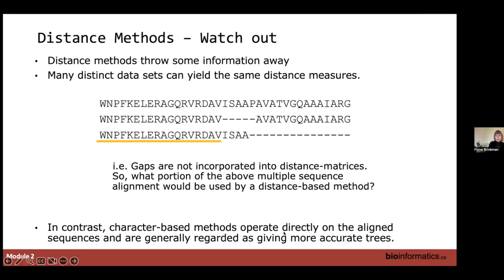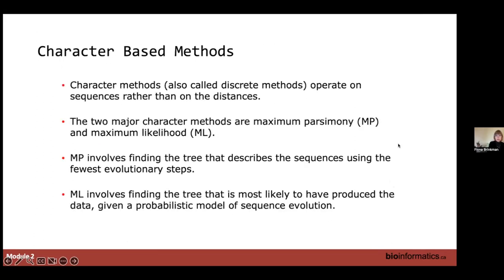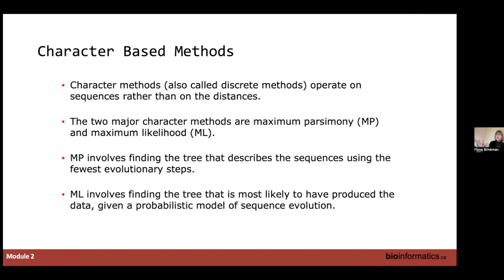In contrast, character-based methods look directly at the sequences; they care about gaps and are generally regarded as giving more accurate trees. So you'll see that most people are using those extensively. Character-based methods — also called discrete methods — operate on the sequences; there are two major methods: maximum parsimony and maximum likelihood. Maximum parsimony basically involves finding the tree that describes the sequences using the fewest evolutionary steps — let's find the minimum number of changes needed to infer this tree.